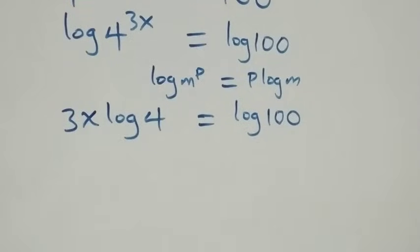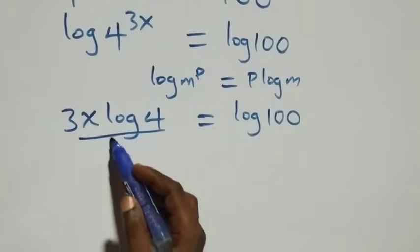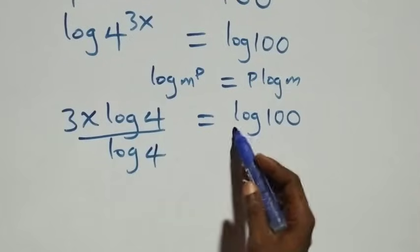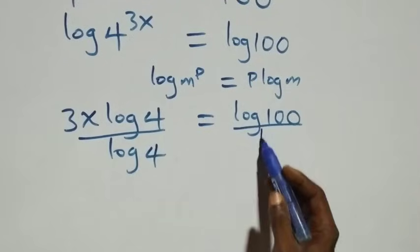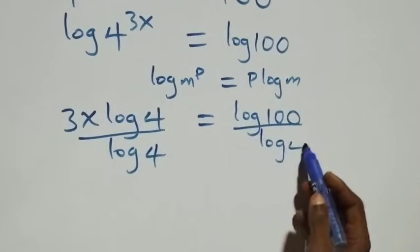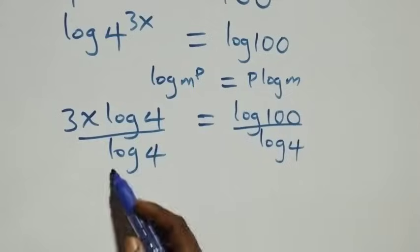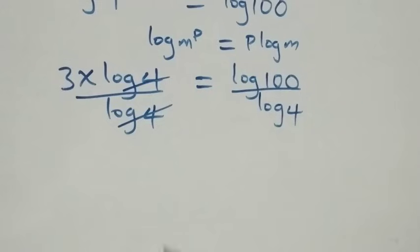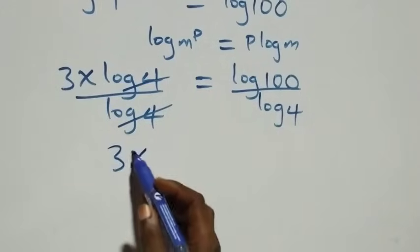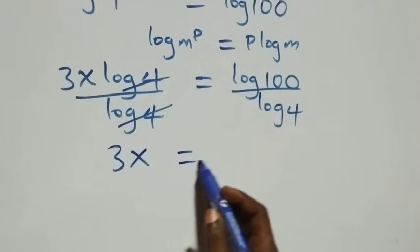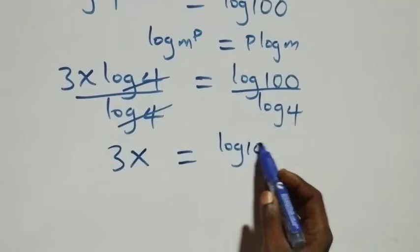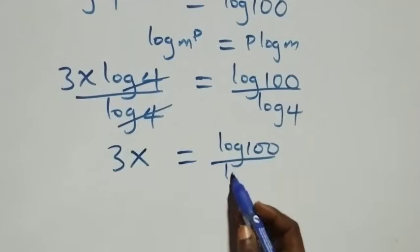Next, we divide both sides by log 4. On the left side, log 4 cancels with each other, and we are left with 3x, which equals log 100 over log 4.